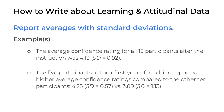Sometimes you'll want to compare two averages in a single sentence. Here's an example: 'The five participants in the first year of teaching reported higher average confidence ratings compared to the other 10 participants: 4.25 (SD = 0.57) versus 3.89 (SD = 1.13).' This is how we can compare averages between subgroups of participants.